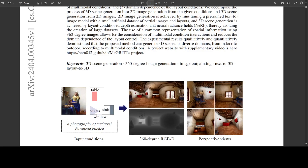And as you might have guessed by now, this method is quite performant. In my humble opinion, it is called MaGRITTe, which stands for Manipulative and Generative 3D Realization from Image, Topview, and Text.